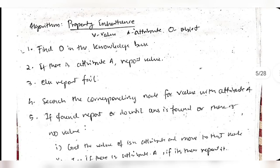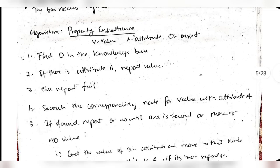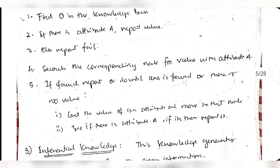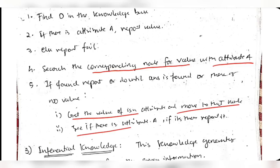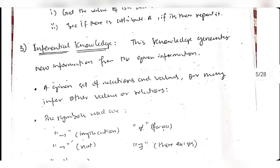There is also an algorithm for property inheritance. Starting from object O in the knowledge base, you find attribute A. If you get attribute A, you return its value; otherwise report false. If no attribute is found, search for the corresponding node with attribute M across the entire set. This is how property inheritance works - get the node, check if the attribute is there, and report accordingly.